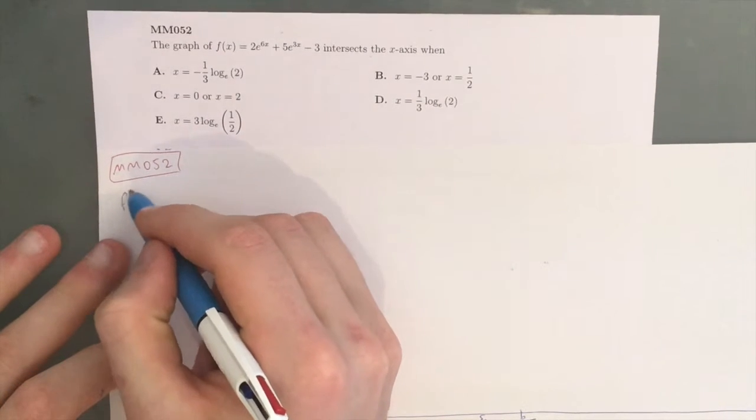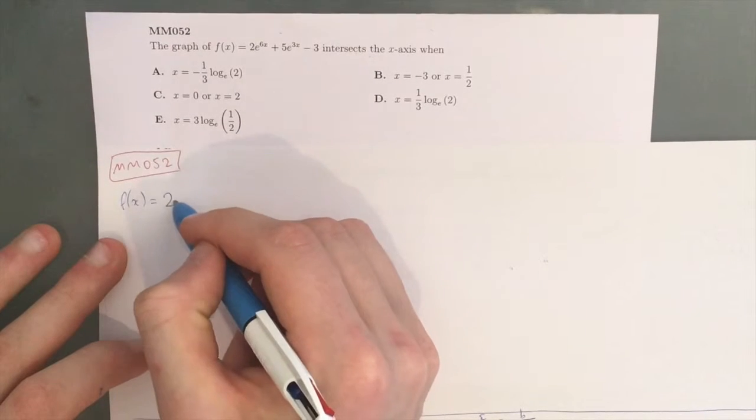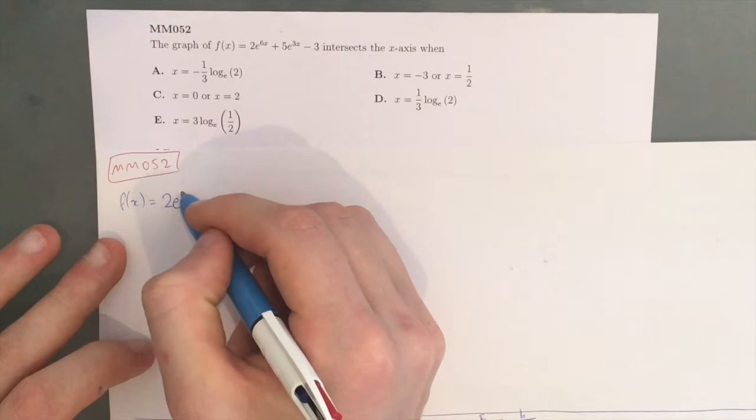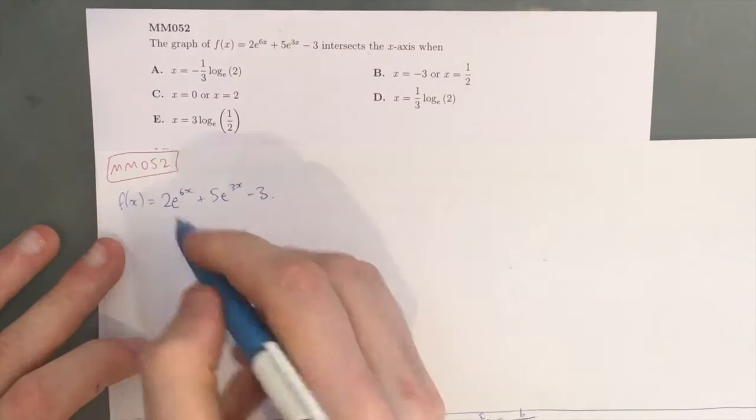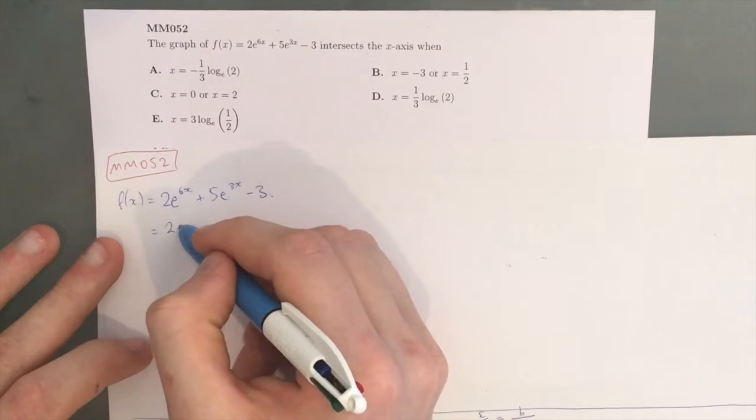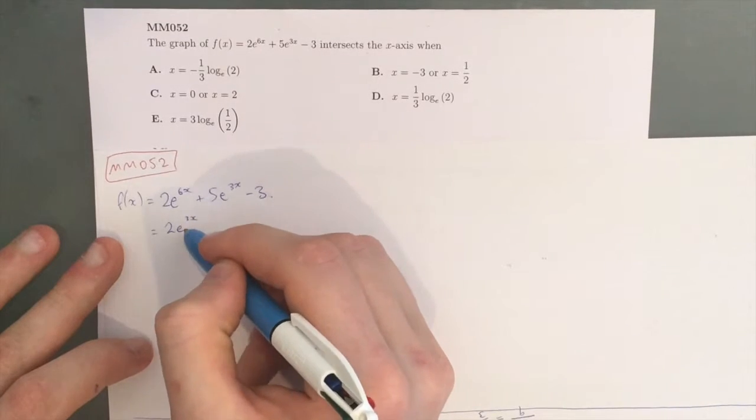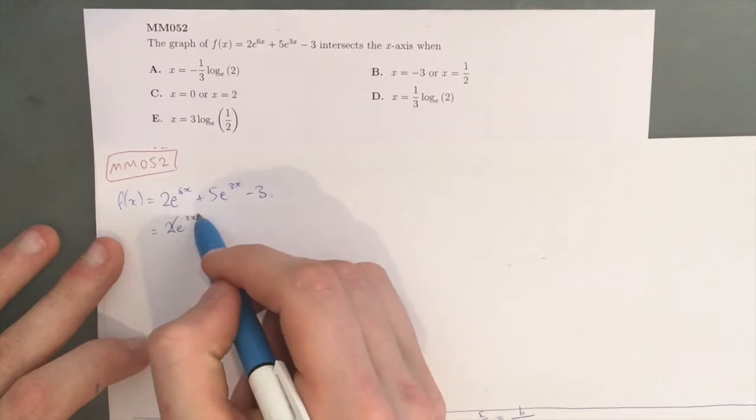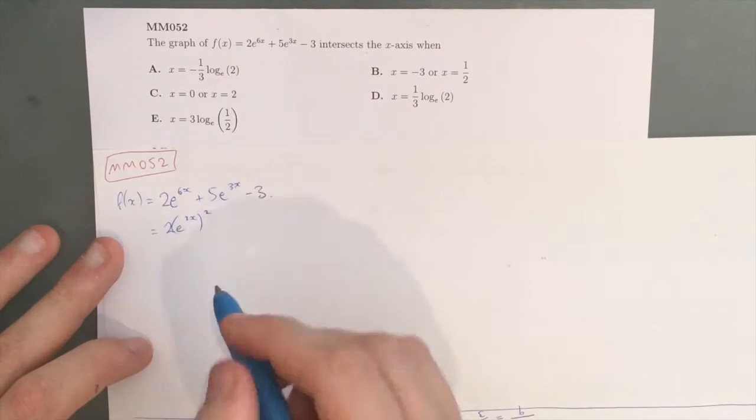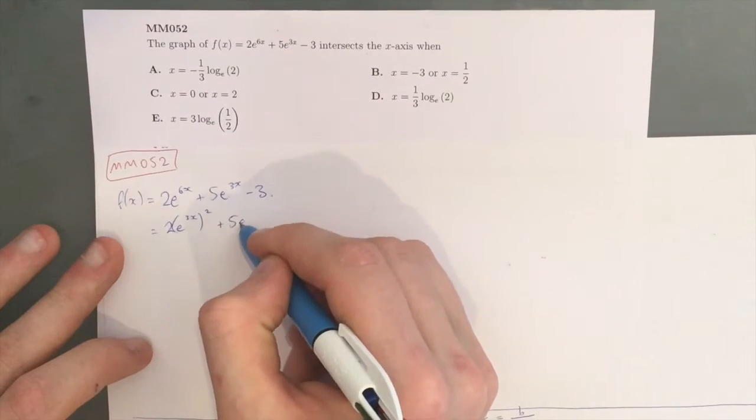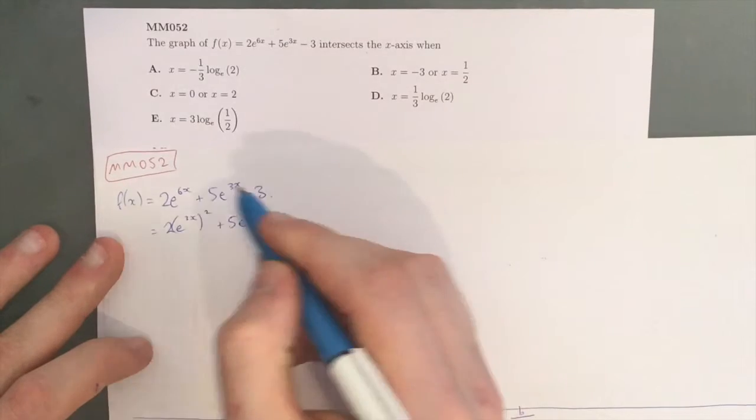If we rewrite this, we get f(x) = 2e^(6x) + 5e^(3x) - 3, and what we want to actually do is try and create a quadratic. So, we have 2(e^(3x))^2, because that actually is the same as e^(6x), according to our index laws, plus 5e^(3x) - 3.